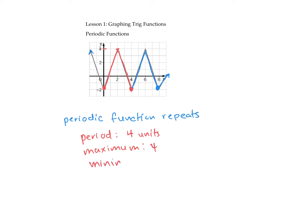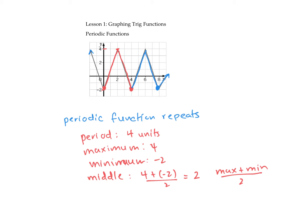The maximum is four and the minimum is negative two. We can find the middle of the graph by taking the top plus the bottom and dividing by two. So we take four plus negative two — that's two — divided by two is one. So the middle is at one. The amplitude is the measure from the middle to the top or the middle to the bottom. It goes from one to four, or one to negative two, so the amplitude is three.